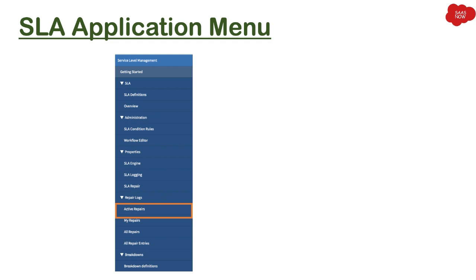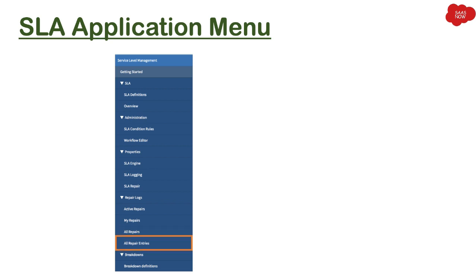The next section is Repair Logs, with modules like 'Active Repairs' — showing repairs still in progress — 'My Repairs' for repairs you have created, and 'All Repairs' which is visible if you are an SLA Admin. There is also 'All Repair Entries' where you can see the entries created for SLAs. Finally, the last section is Breakdown, where you define different breakdowns. We will learn more about what breakdowns are in later sections.